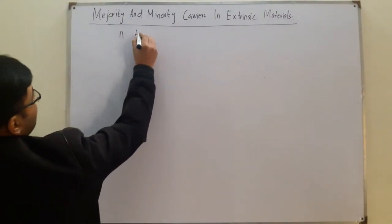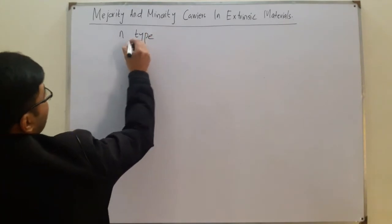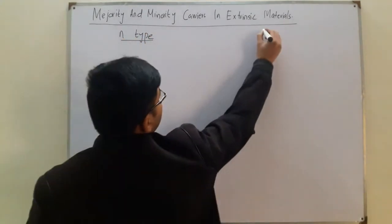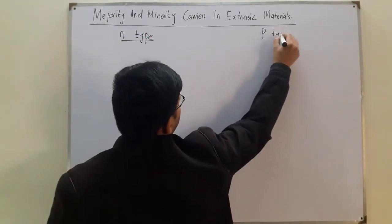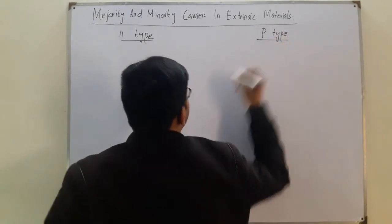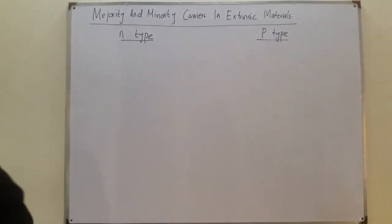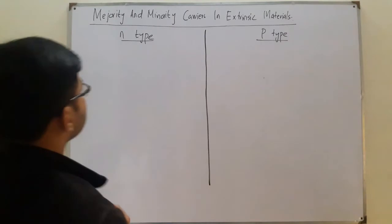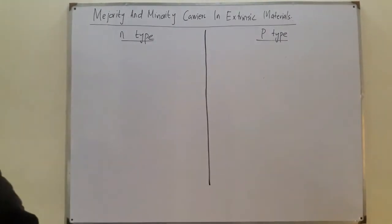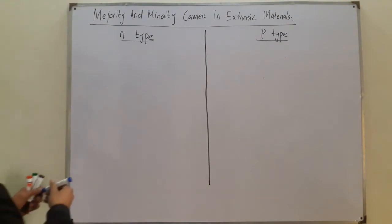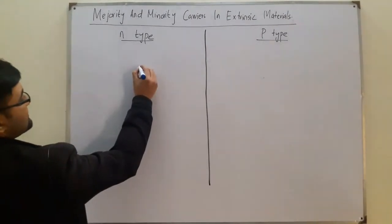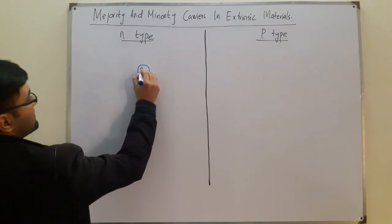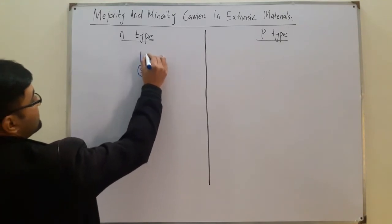First, over here you have the n-type and over here you have the p-type materials. Let me draw a line in between these two with this darker marker. So now, what do you have in the n-type material? We saw that an impurity was added — let's say it was antimony — so it had five valence electrons.